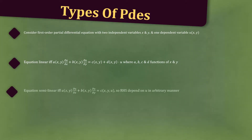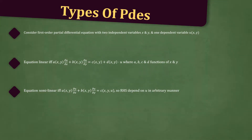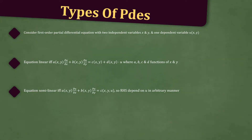The equation is said to be semi-linear if and only if a(x,y) times the partial derivative of u with respect to x, plus b(x,y) times the partial derivative of u with respect to y, is equal to c(x, y, u), so now the right-hand side can depend on u in an arbitrary manner.